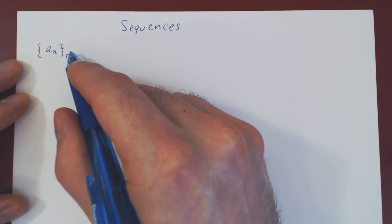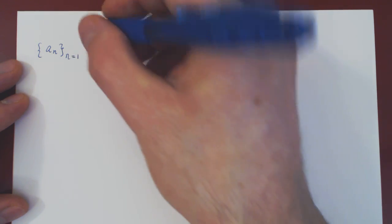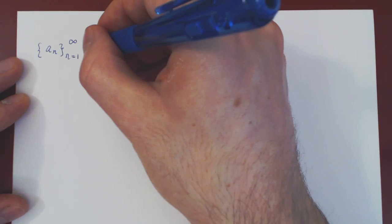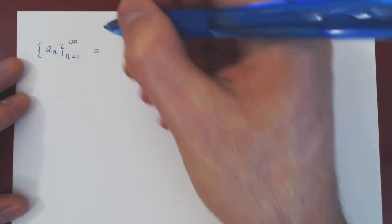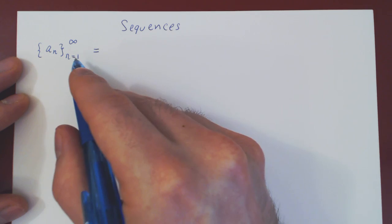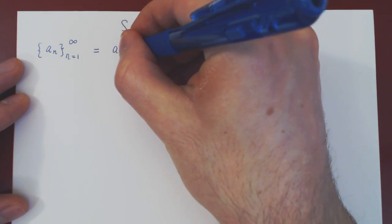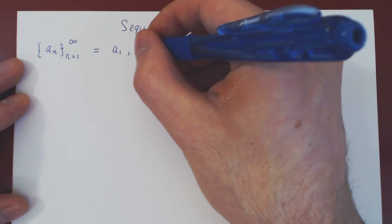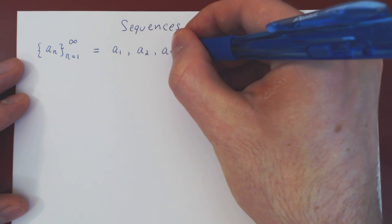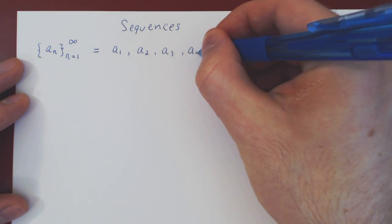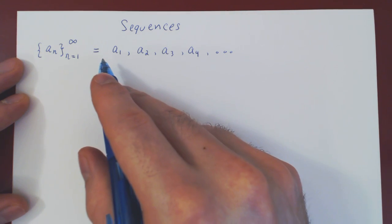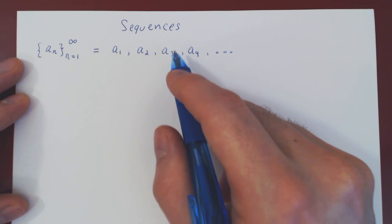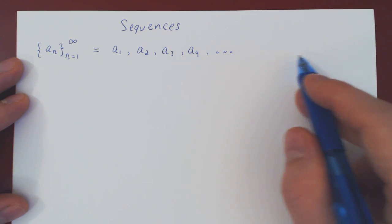So n will be equal to 1, then 2, then 3, then 4, all the way up to infinity. A sequence is an infinite list of real numbers, and we can write out the terms explicitly: the first term is a_1, the next term when n is 2 gives us a_2, then a_3, then a_4, and so forth. Each of a_1, a_2, a_3, a_4, and so on is a real number.